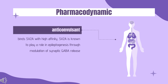Pharmacodynamics. Brivoracetam binds SV2A with high affinity. SV2A is known to play a role in epileptogenesis through modulation of synaptic GABA release. It is thought that Brivoracetam exerts its anti-epileptogenic effects through its binding to SV2A. Brivoracetam is also known to inhibit sodium channels, which may also contribute to its anti-epileptogenic action.